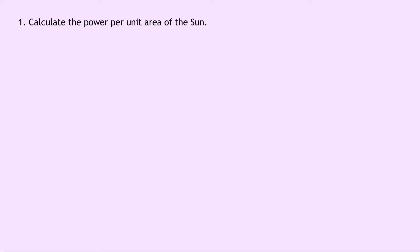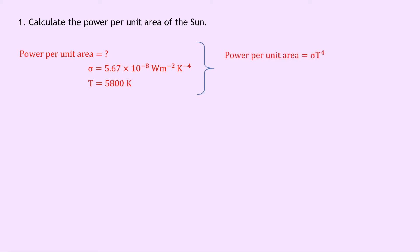Question 1 says to calculate the power per unit area of the sun. Writing down what we know: we're trying to find the power per unit area. We know that sigma is 5.67 times 10 to the minus 8 watts per meter squared per Kelvin to the 4, which is Stefan-Boltzmann's constant from the datasheet, and the surface temperature of the sun is 5800 Kelvin. So writing down our equation: power per unit area equals sigma T to the 4. Substituting in our numbers gives us 5.67 times 10 to the minus 8 times 5800 to the power of 4 — make sure you remember that power of 4 — giving an answer of 6.4 times 10 to the 7 watts per meter squared.